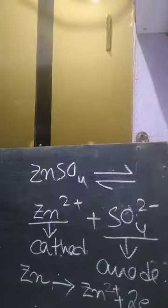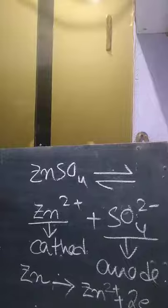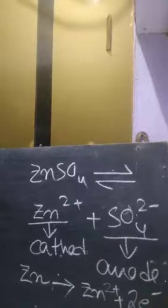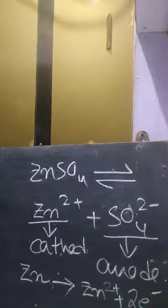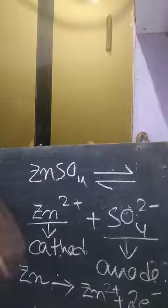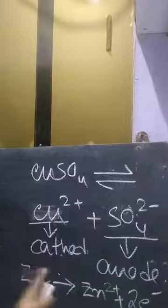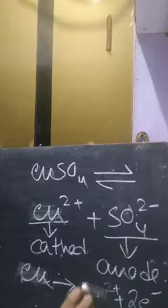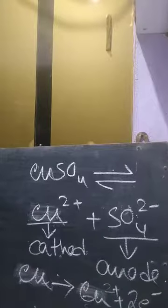Copper ion has the tendency to gain electrons. So if we consider copper instead of zinc, Cu²⁺ will become Cu — it gains two electrons to become neutral copper.